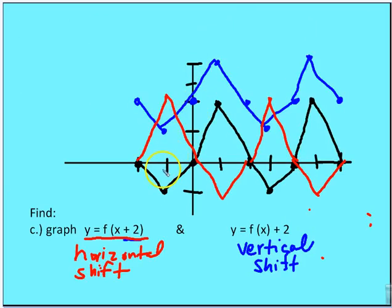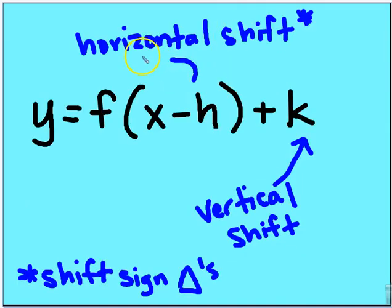When the value is inside the parentheses — f of x plus 2 — we're shifting the graph right or left. When the value is outside the parentheses, we're shifting the graph up or down. Back to our original function y equals f of x minus h plus k: the vertical shift is k, and the horizontal shift is h. You have to change the sign of h to represent the correct horizontal shift direction.